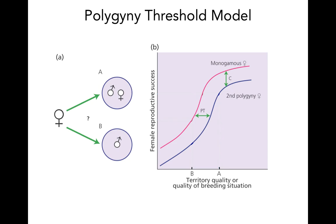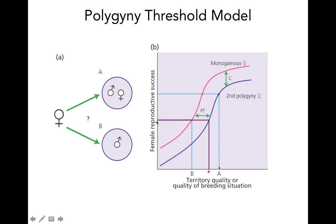Looking at where the fitness payoff is for females for these two different choices: B is a bachelor male, so if the female mates with B she'll be the first monogamous female — we trace up to where we hit the red curve and look over to the y-axis to get her fitness payoff. For male A, if she chooses A she's going to be the second female, so we go up to the blue curve and trace over. You can see that fitness payoff is actually higher than it would be for her to be monogamous with the male at territory B.